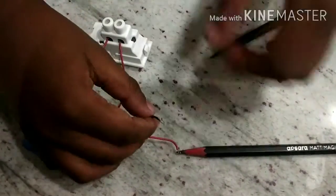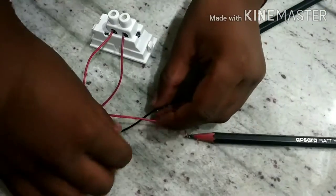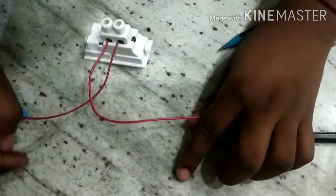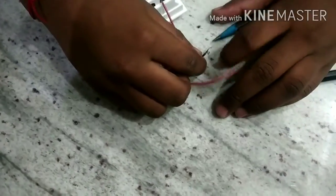Now take the other negative wire of the 9 volt battery connector and connect it to the other pencil nib.